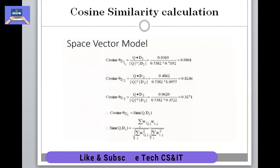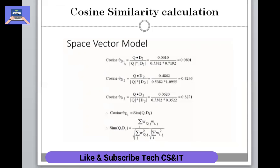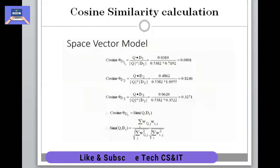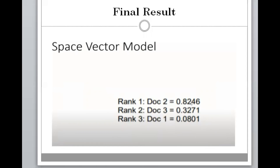We put the dot products and magnitudes into the cosine similarity formula for each document: dot product of query with D1 over the magnitude of query and D1, and similarly for D2 and D3. The resulting values show D2 at 0.82, D3 at 0.32, and D1 at 0.081. The document closest to one is the most relevant, so the ranking is: D2 first, D3 second, and D1 third. That's all about the vector space model.